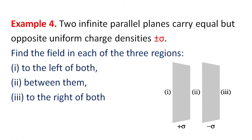Region two is the region in between the planes. We need to find the field to the left of both planes, which is region one; between them is region two; and to the right of both is region three.